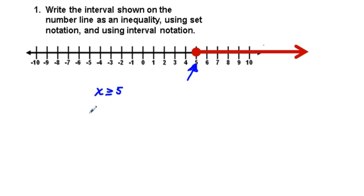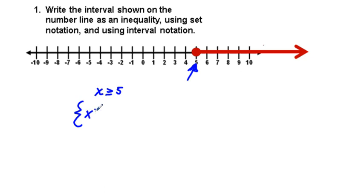Next, set notation. Our set notation is very similar to the inequality notation, so that's why when you have set notation it's convenient to work out inequality notation first. We put an open bracket, x, vertical line meaning 'such that', x is greater than or equal to five, and then we put our surrounding bracket.